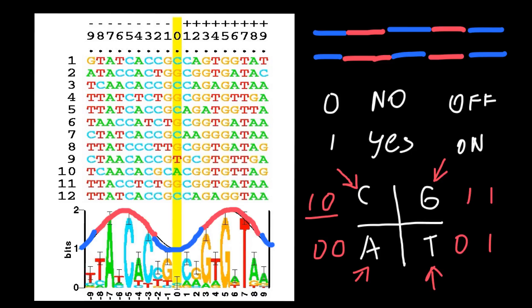My last note: how do we know the consensus sequence from the logo if there is no separate line showing it? This is very easy — we just have to read all the bases that appear on the top, since those with higher frequencies would be on top. So the consensus sequence of all these 12 sequences would be T, T, A, T, C, A, C, C, G, G, T, G, T, A, A.